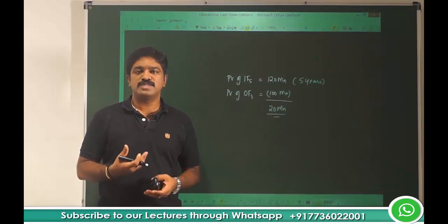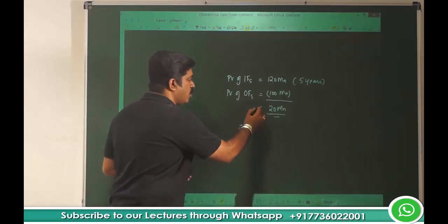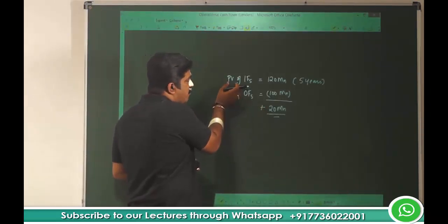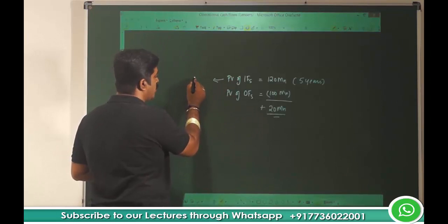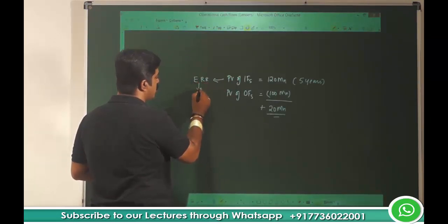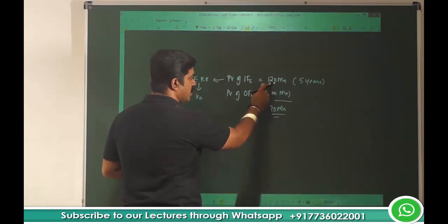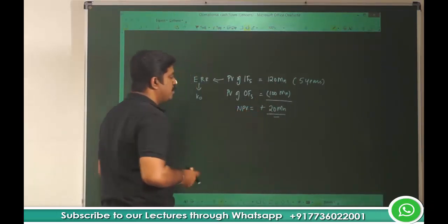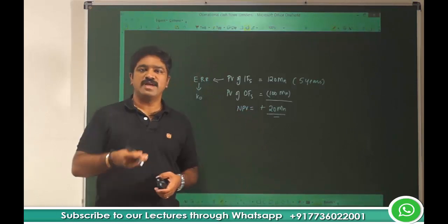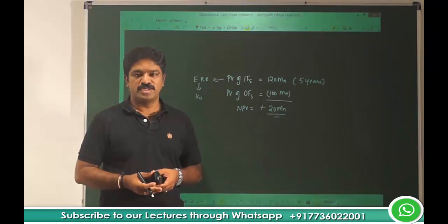This is the wealth which is added to the shareholders immediately. This is good for the organization because the way in which I found the present value is by discounting, and the discounting takes care of my expected rate of return, which is nothing but the cost of capital. Since I discounted it at the expected rate of return and despite discounting the present value is greater than the investment — which is 120 — I have a surplus. This is called positive NPV. It is as good as giving 100 million now and receiving 120 million, making an immediate wealth of 20 million for the shareholders.